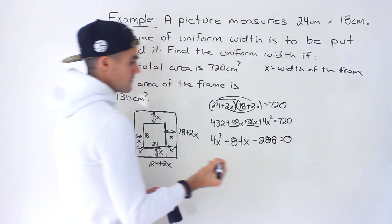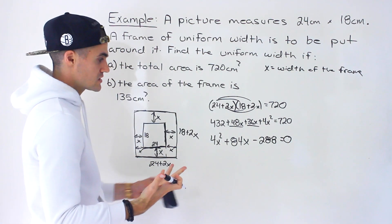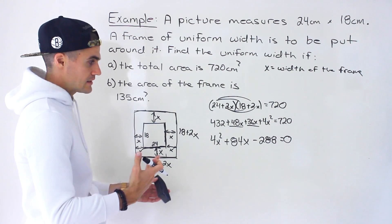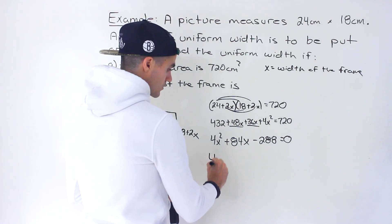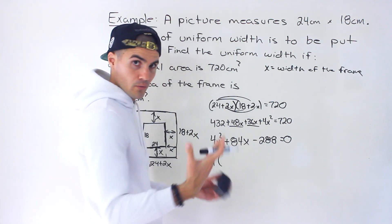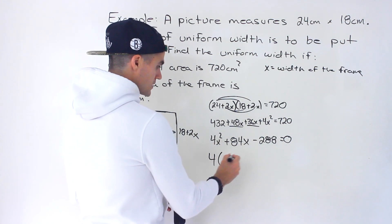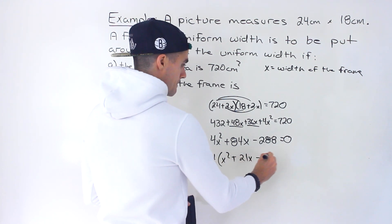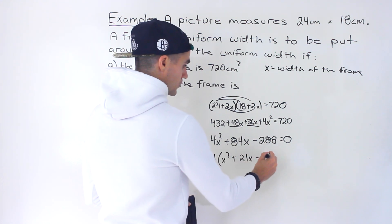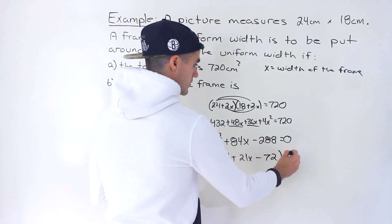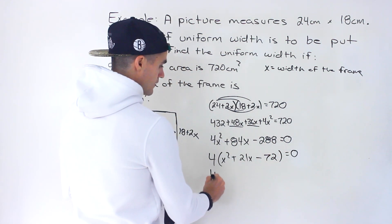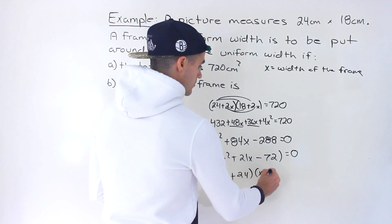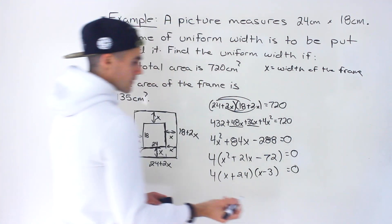This is a quadratic equation. We can try to factor it. Dividing everything by 4 gives x squared + 21x − 72 = 0. This factors into (x + 24)(x − 3) = 0. If factoring doesn't work smoothly, you can always use the quadratic formula — you'll get the same solutions.